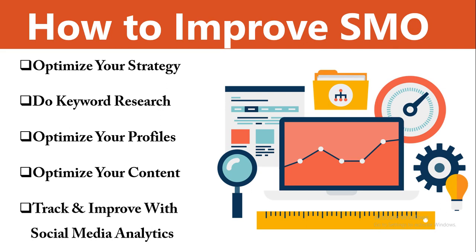Third is to optimize your profiles for SEO. Just as optimizing your website helps search engines understand what your site is about, social media optimization requires you to optimize your profile. Fourth is to optimize your content. Content is king in SEO, and the same is true for SMO — content drives social media. You can't succeed without sharing quality content. There are two types of content you can publish on social media: original content and curated content.